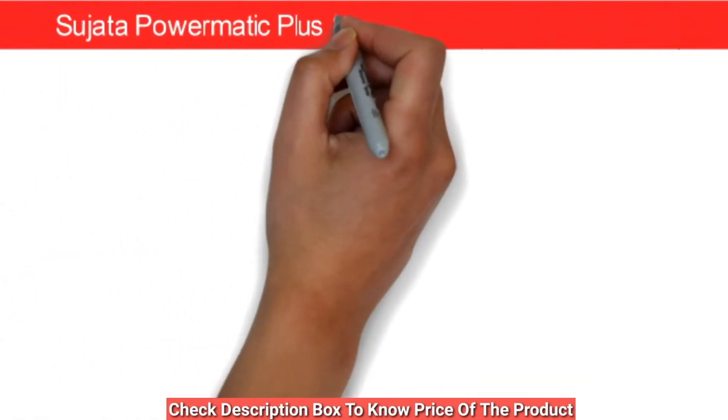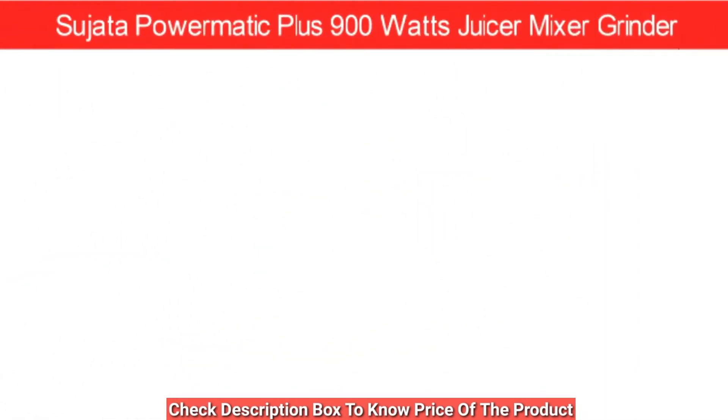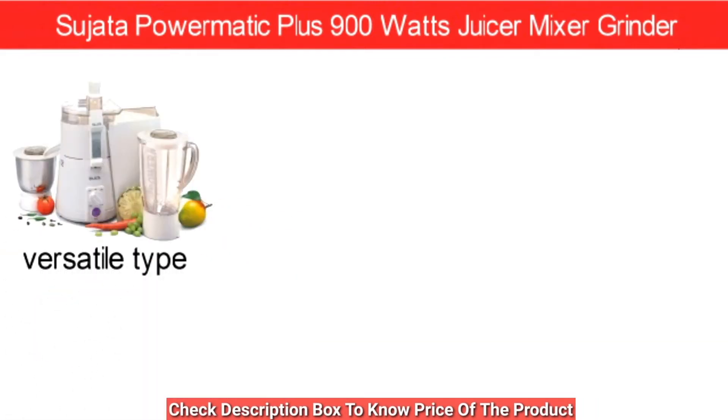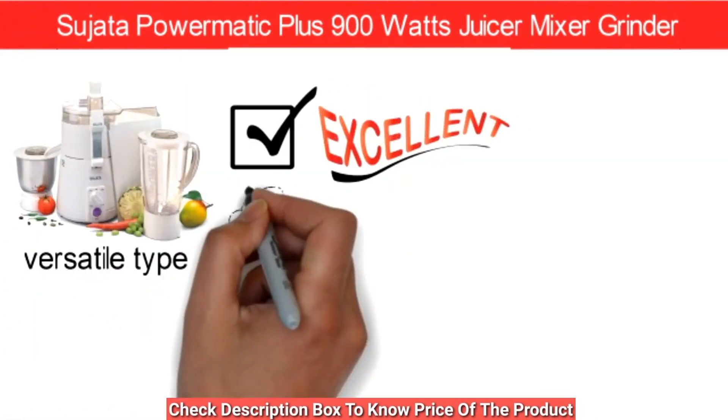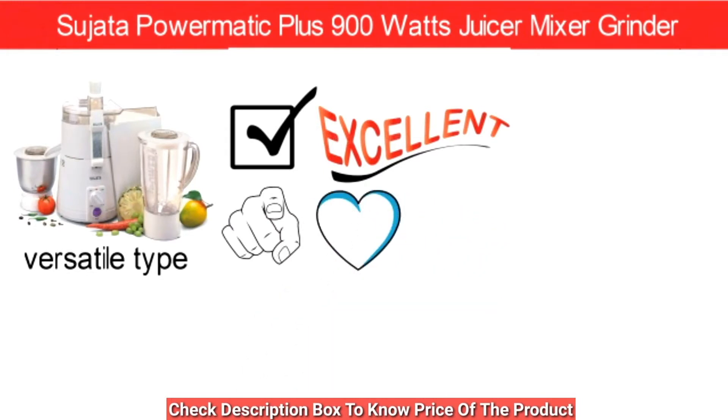Next, the best juicer is Sujata Powermatic Plus 900 Watts Juicer Mixer Grinder. This juicer is a versatile type that gets things done in an excellent way. You get to do the things you love - grind and extract juice with this mixer juicer.